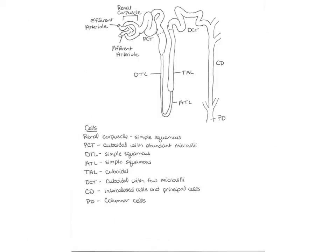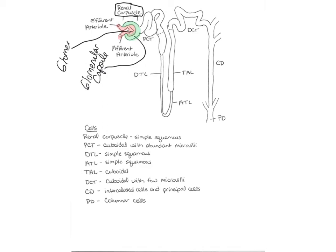This is the nephron — the functional unit of the kidney. The afferent arteriole branches off into the capillary bed called the glomerulus, and then the capillaries merge to form the efferent arteriole. The first part of the nephron tubule is called the glomerular capsule. The glomerular capsule and the glomerulus together form what we call the renal corpuscle.